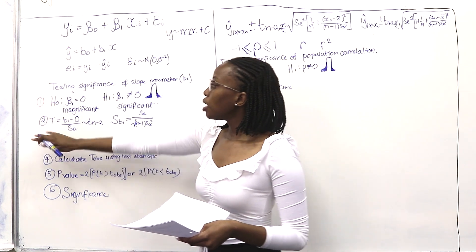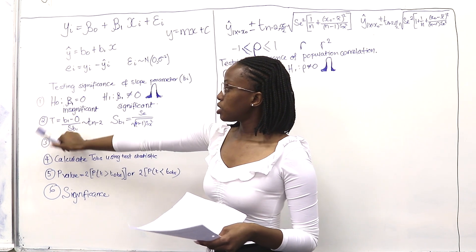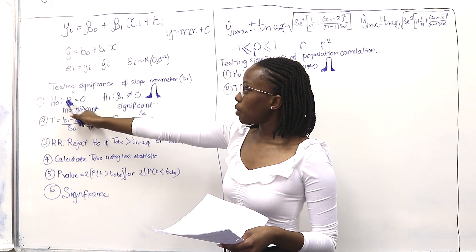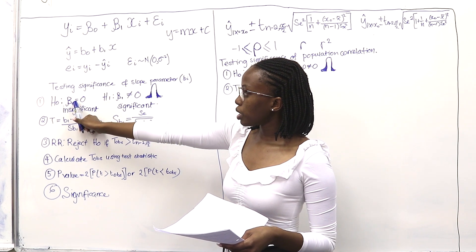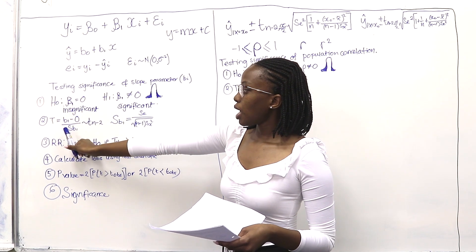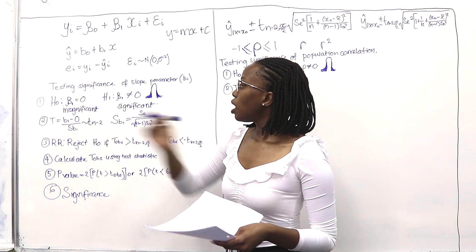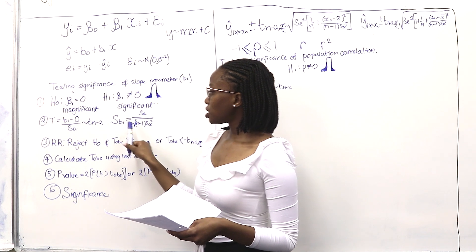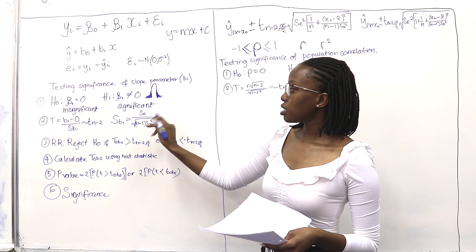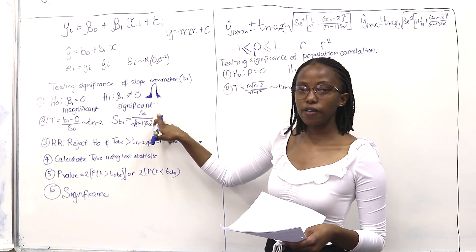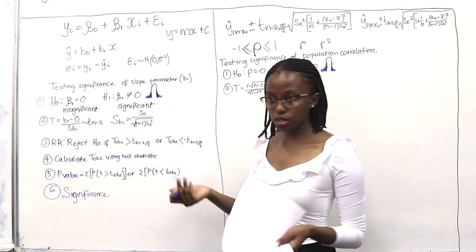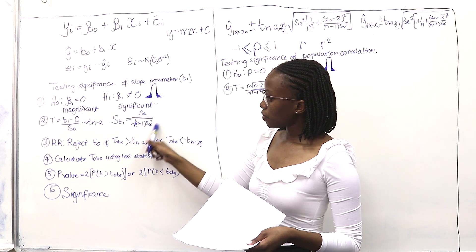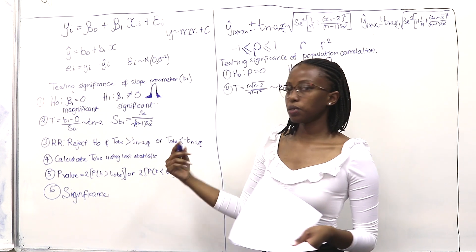For our test statistic, we have t equals beta 1 minus 0 over Sb1, because our beta 1 from the population is 0 under H0. For Sb1, the equation we use is Se divided by the square root of the sum of squared deviations. In this course, we are always given Se — we don't have to calculate it.